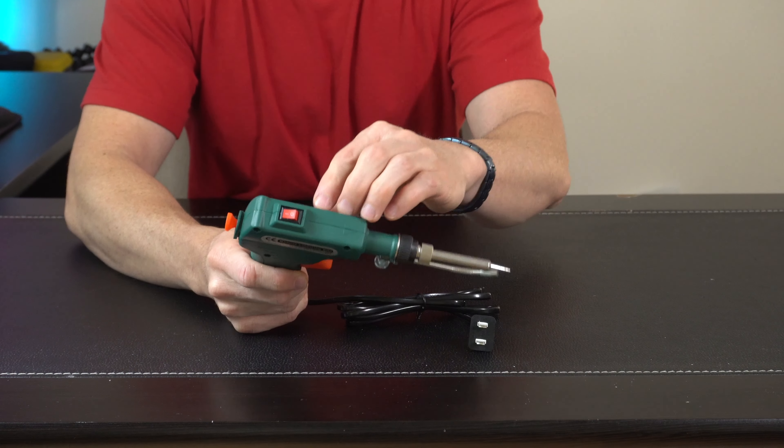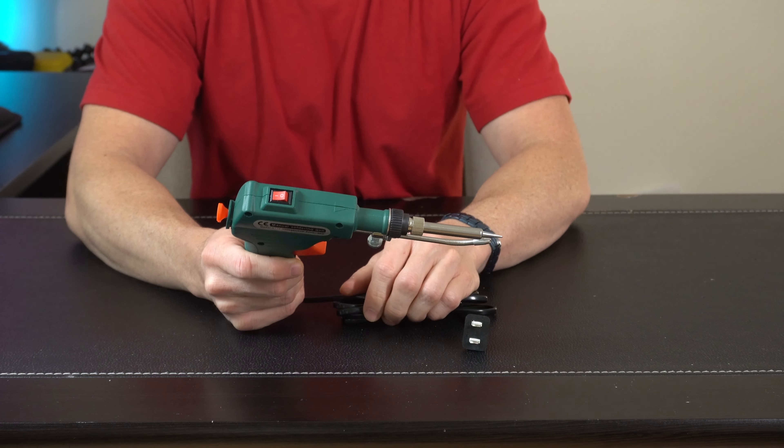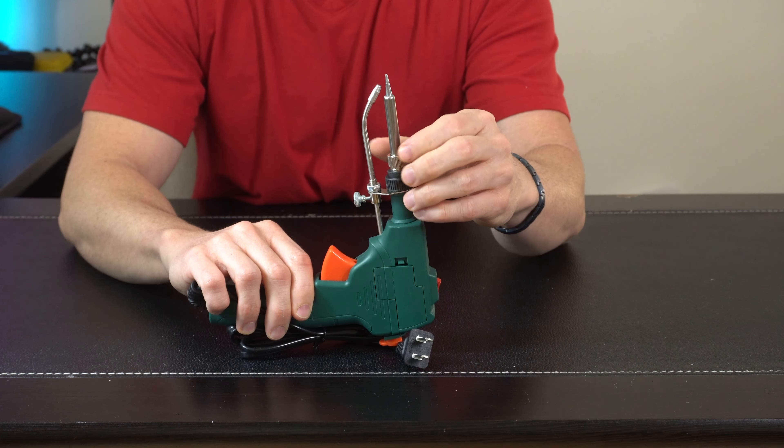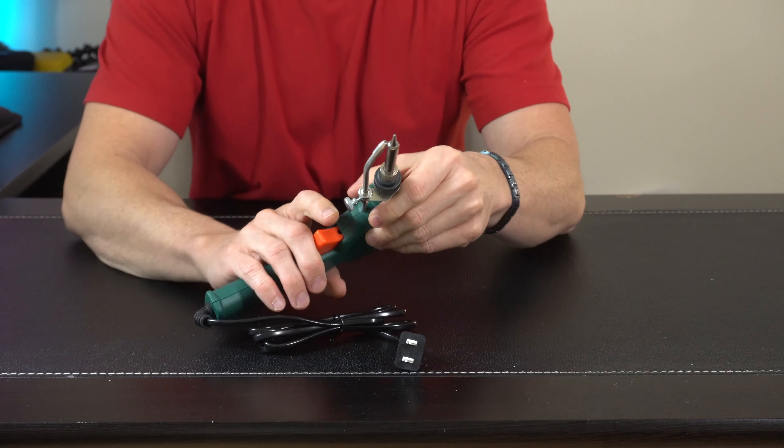So this is a 60 watt soldering iron, simple on-off operation right here on the very top. If you ever need to change out any of the tips here, just release right here. It's pretty standard for a soldering iron.